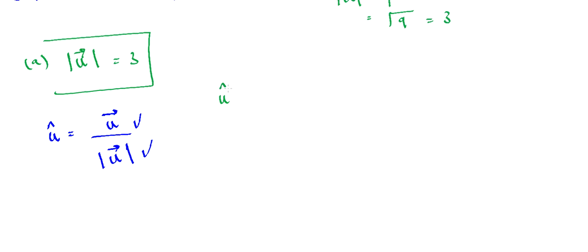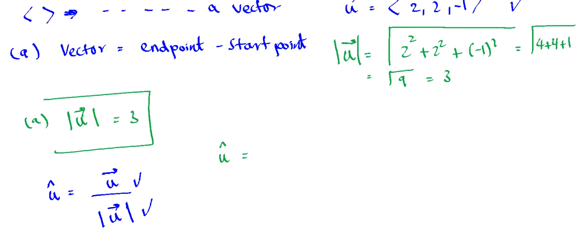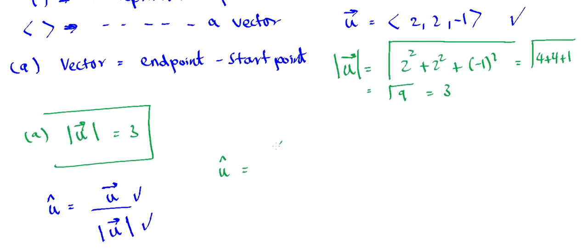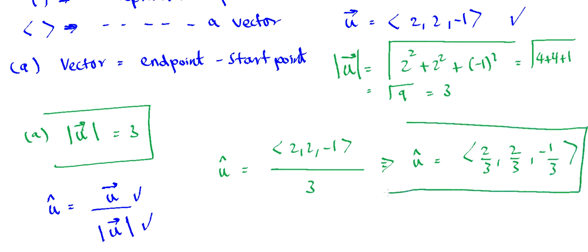So u hat will be vector u, which we found to be 2, 2, and negative 1, divided by its magnitude, which we found to be 3. Therefore u hat is equal to 2 over 3, 2 over 3, and negative 1 over 3. And that's the answer to part b.